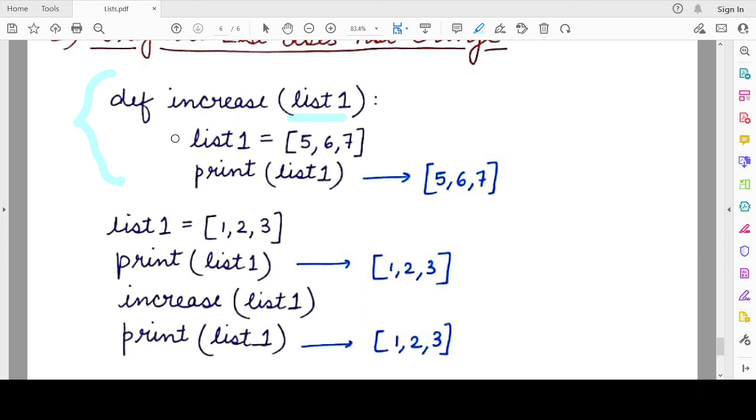Inside it, the function is creating a local variable with the same name known as list1. This is a local variable of the function and it is assigning some value to this local variable list1. When we print this list, this particular value will be linked to the local variable and not to the global list which was passed here.